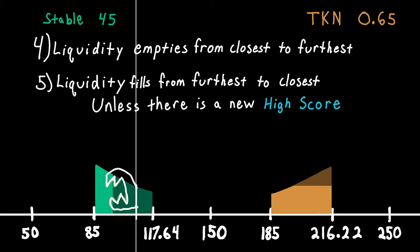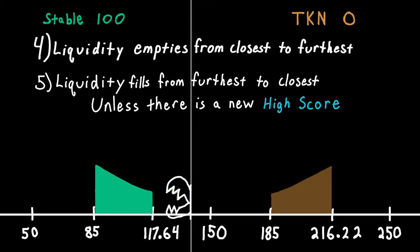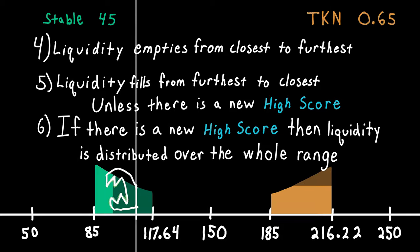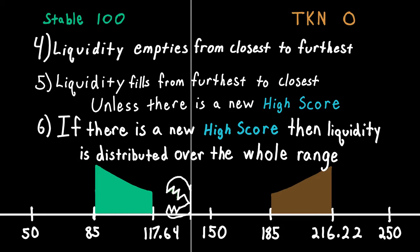The sell range is empty and has never had any TKN, so let's look at the next rule. If there is a new high score, then the liquidity is distributed over the whole range.